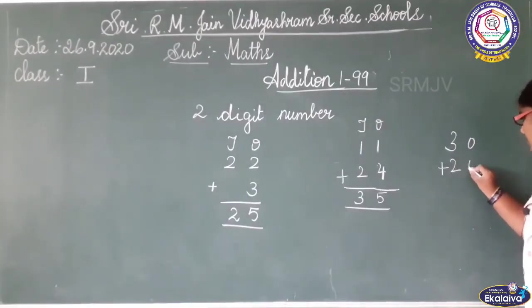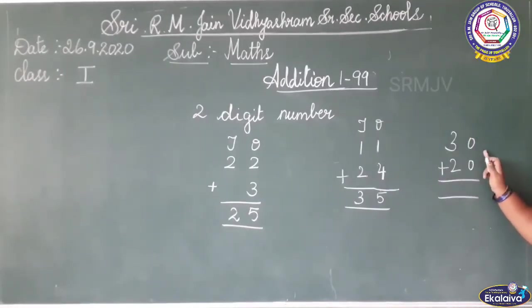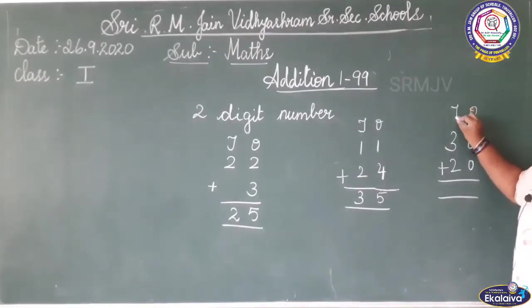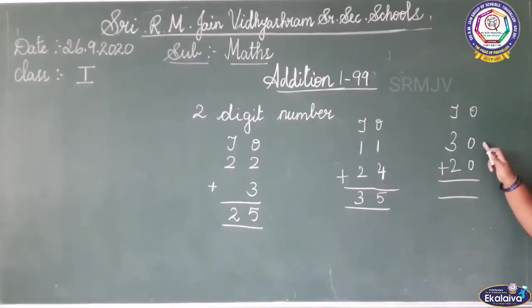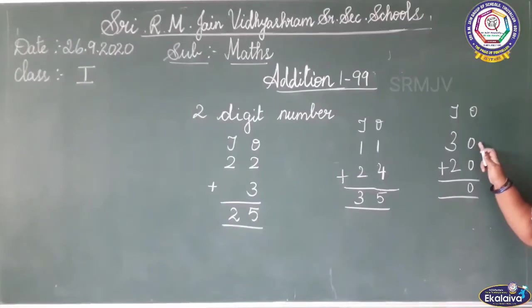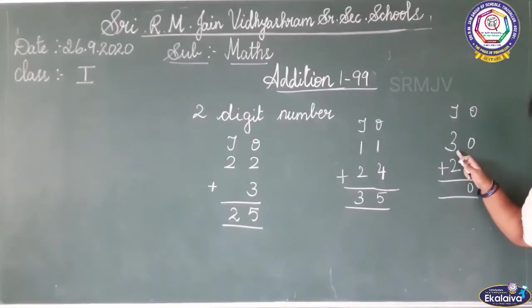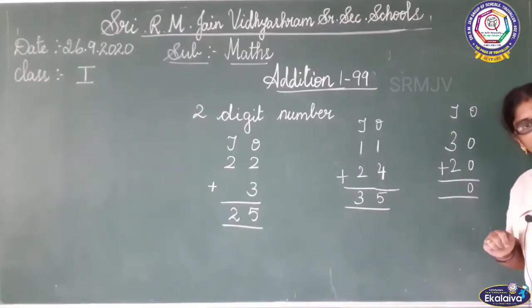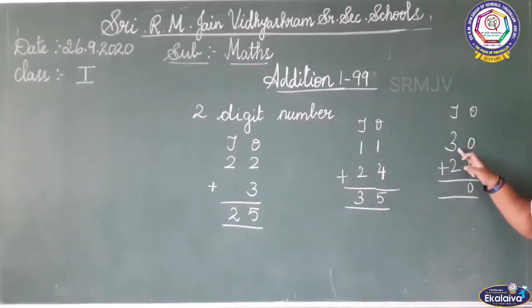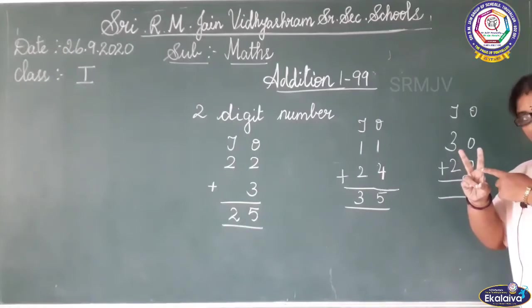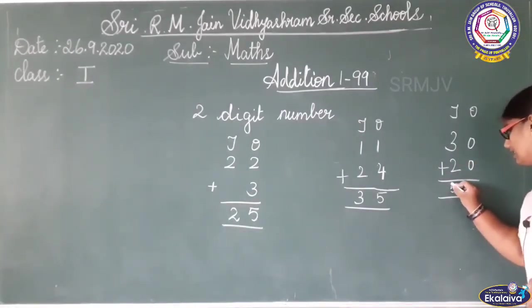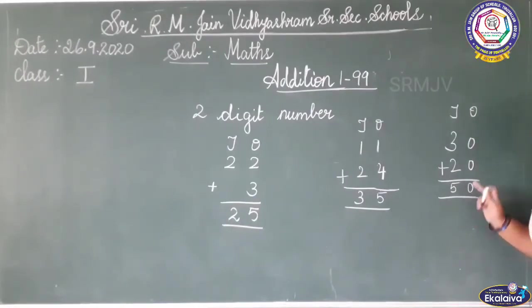Thirty plus twenty. First, what I have to write here? Ones, tens. Both the numbers in ones place are zero. If you add zero with zero, you get zero. Now in tens place: three. What is the number here? Two. You must keep three in the mind, two in the finger. After three: four, five. So I got the answer fifty. Thirty plus twenty equals fifty. Is it clear, children?